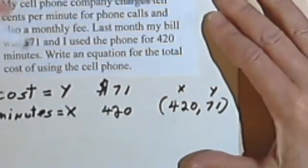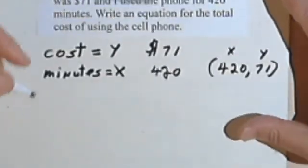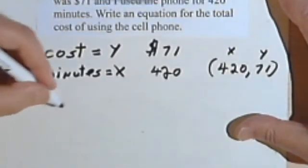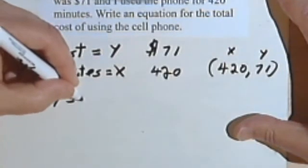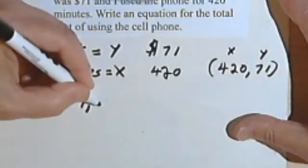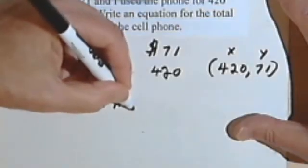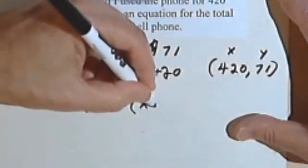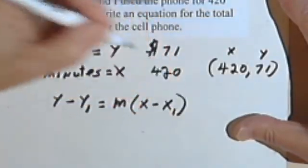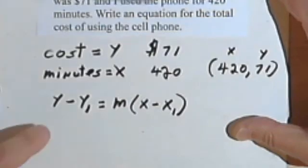Okay, now my formula for the point-slope form of a line is y minus y sub 1 equals m, or the slope, times x minus x sub 1. So let's see what we can do with this.